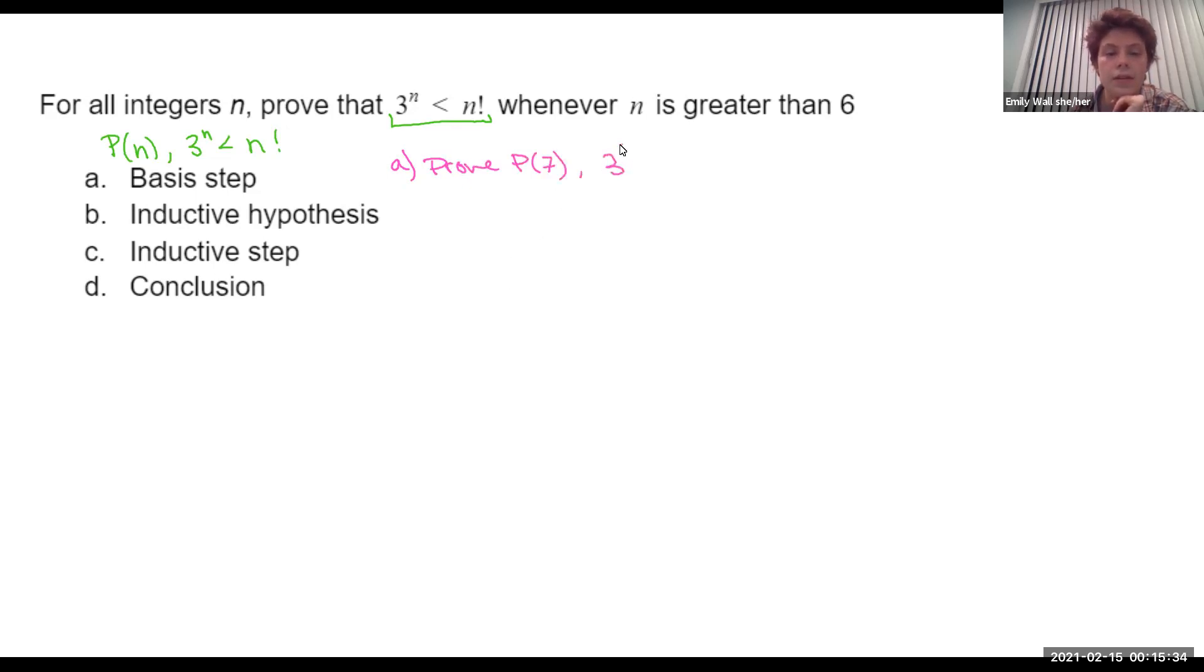P(7) is that 3^7 is less than 7 factorial. And here I pulled out a calculator and found that 3^7 equals this very large number, which is less than this larger number, which equals 7 factorial. And checkmark, we proved it. Riveting content, I know.